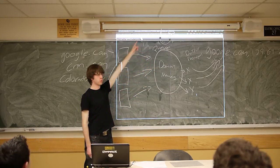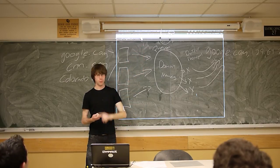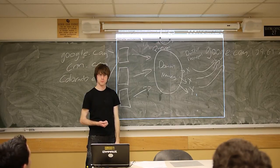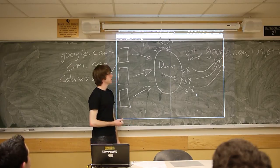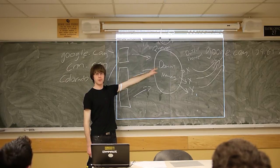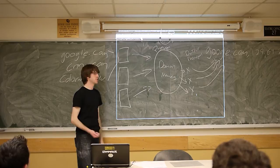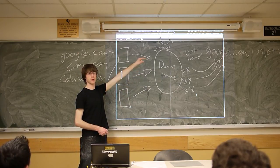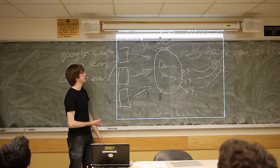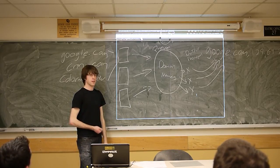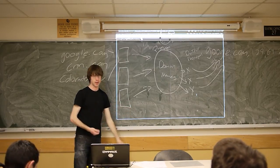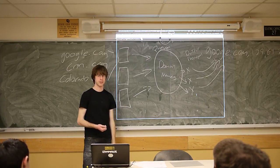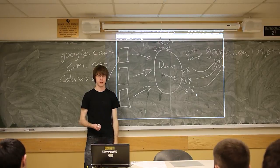We will provide a queue and a utility function handling some of the DNS lookup. You can't use existing thread-safe data structures from external libraries because part of the point is that our queue is not thread-safe - you have to either write your own thread-safe queue or protect ours with semaphores. The assignment comes out Monday; look at it before recitation next week, come with questions. Start getting a feel for what it is.